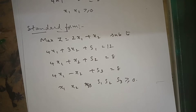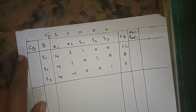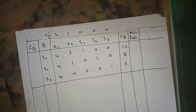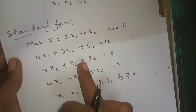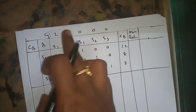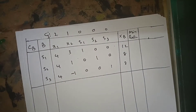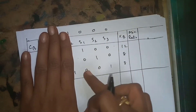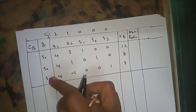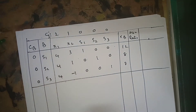After converting into the standard form, we draw the simplex table. The simplex table has columns: cb, basis (basic variables), x1, x2, s1, s2, s3, xb (RHS), and minimum ratio. We fill the body of the simplex table using the constraints. The objective function coefficients cj come from Max Z = 2x1 + x2. We have an identity matrix at the s1, s2, s3 columns, so s1, s2, s3 are the initial basic variables.